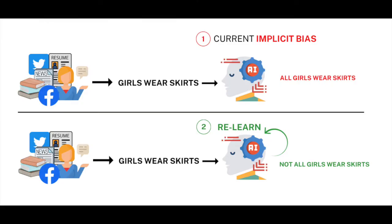In our current research, there is already a lot of methods in generating any type of data that we want. My research aims to figure out the best way to use these data generating methods to eliminate bias in our AI systems.